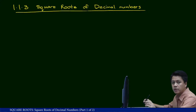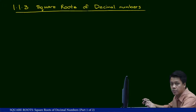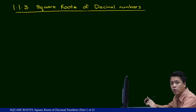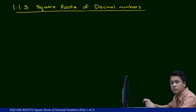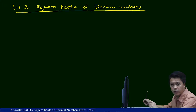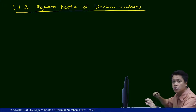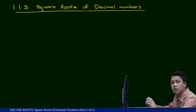In the previous videos we learned about how to find a square root of a perfect square, including very large numbers. In this section we are going to learn how to find the square root of a decimal number. But before we learn the method, let's observe and study the square of decimal numbers. I'm going to pick four decimal numbers, square them, and see whether we can observe any similarities between the number and its square.